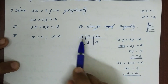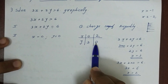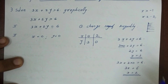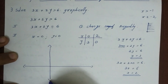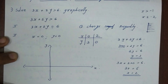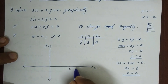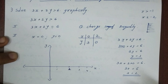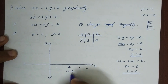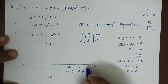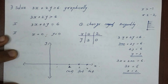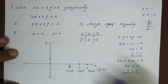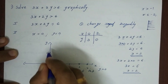So x equals 2 and y equals 0 gives us the point (2, 0). On the x-axis, we mark the point at 2, and on the y-axis, we mark the point at 3. This gives us coordinates (0, 3) and (2, 0).